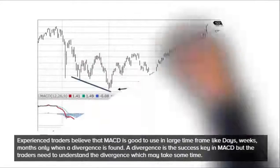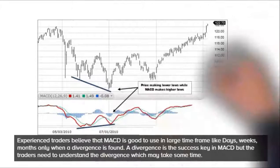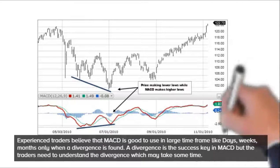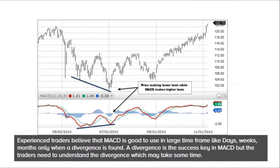Experienced traders believe that MACD is good to use in large time frames like days, weeks, and months — months only when a divergence is found. A divergence is the success key in MACD, but traders need to understand the divergence, which may take some time.